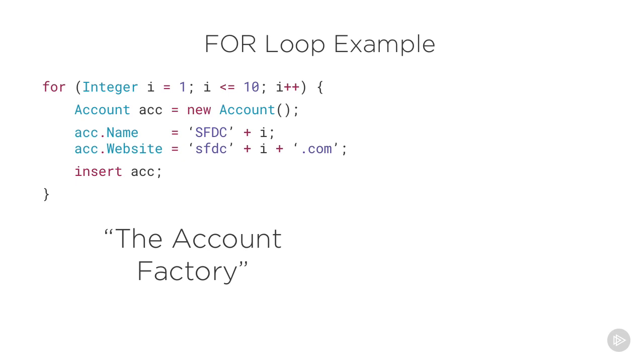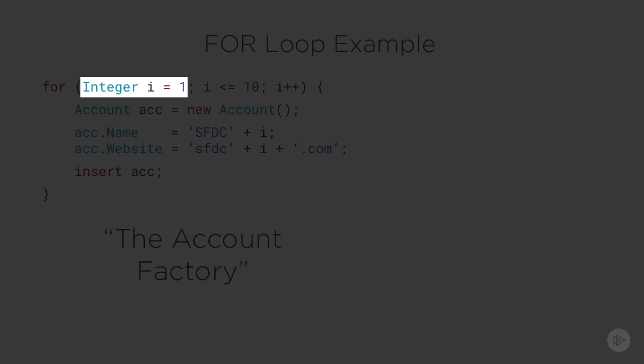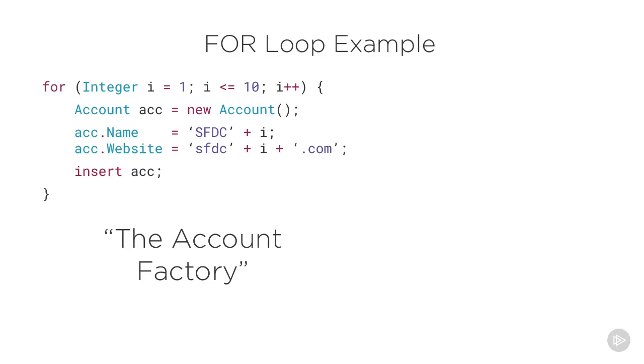Here we're making a for loop that'll run exactly 10 times. I know this because i starts at 1, it increments by 1 each loop iteration, and it'll stop looping after i equals 10. Specifically, this code's purpose is to create exactly 10 accounts.